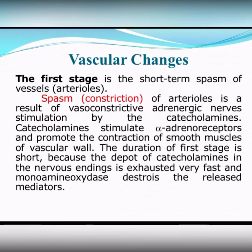Once more, about the mechanism of development of these vascular changes. Why at first we have vasoconstriction: it is a result of vasoconstrictive adrenergic nerve stimulation by catecholamines. Catecholamines stimulate alpha-adrenergic receptors and promote the contraction of smooth muscles of the vascular wall. The duration of the first stage is short because the depot of catecholamines in the nervous endings is exhausted very fast.